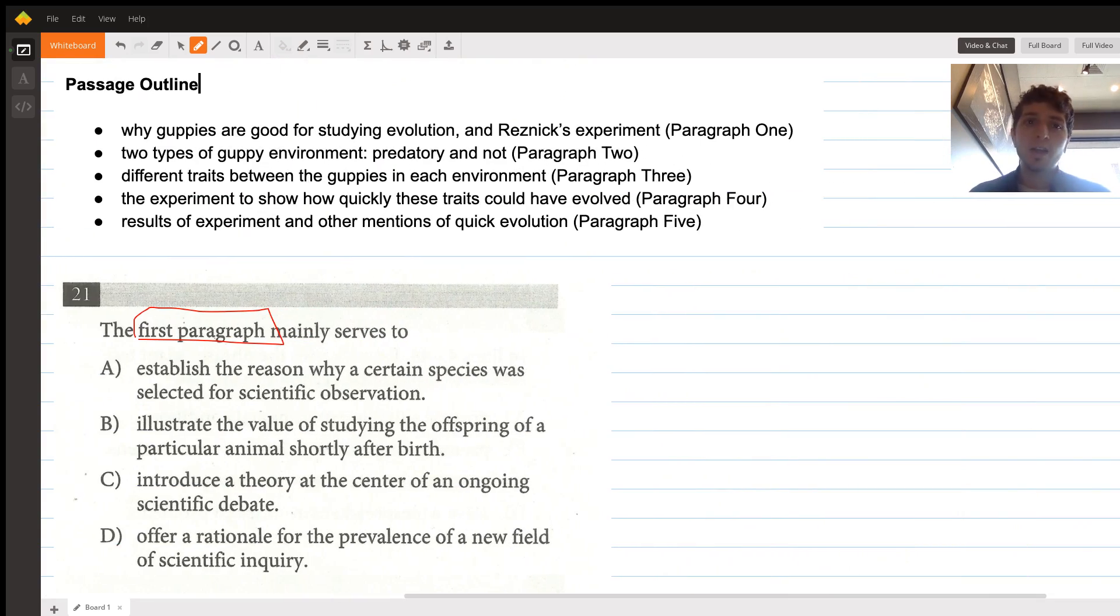Let's go to our answer choices and see if we have one that's about introducing guppies, some features of guppies, and trying to explain why they might be good to study. A says establish the reason why a certain species was selected for scientific observation. This matches almost perfectly what we just said—the reason is that they mature so quickly, they reproduce so quickly, and that's why they were selected for scientific observation. This is a good answer.